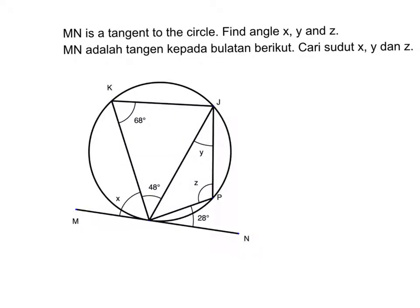MN is the tangent to the circle. Find angle x, y, and z. So this is the tangent.